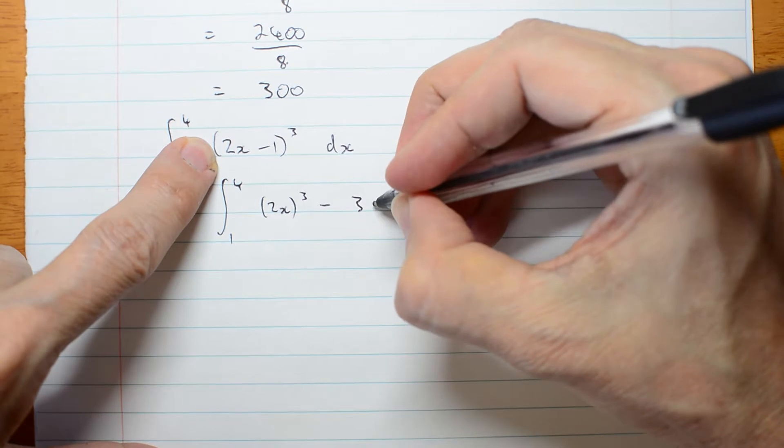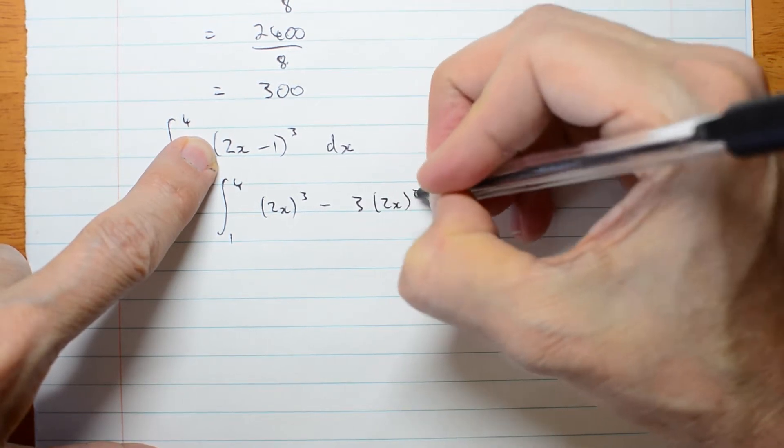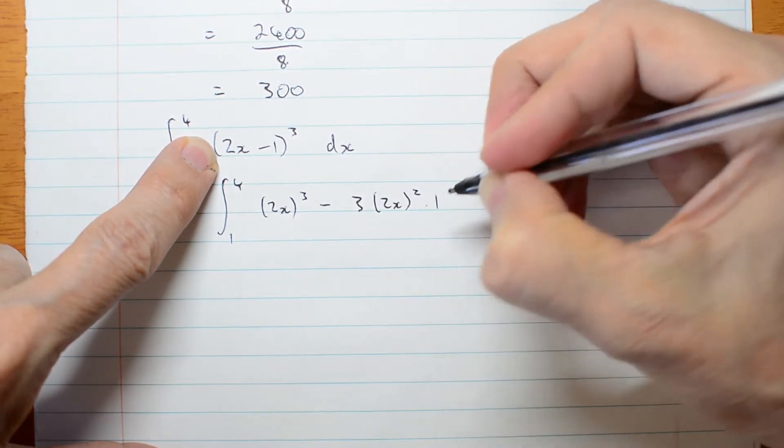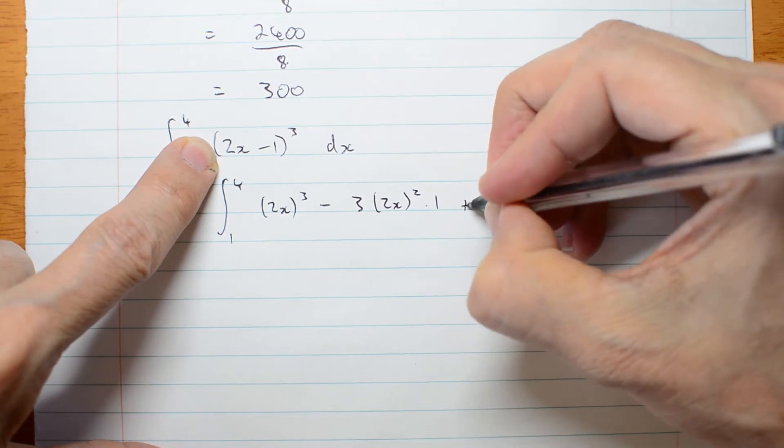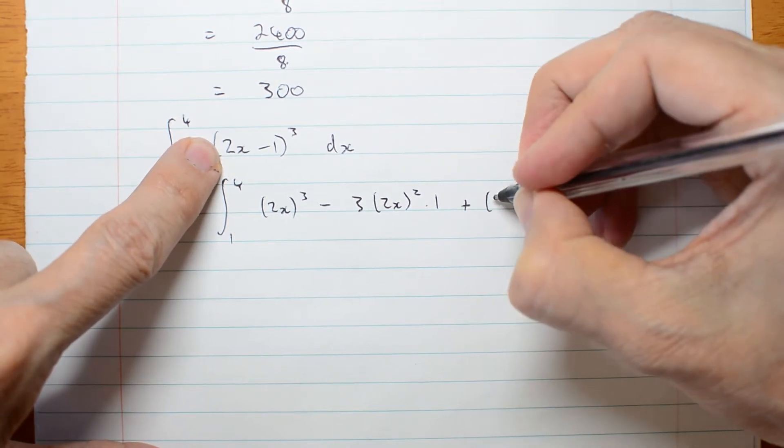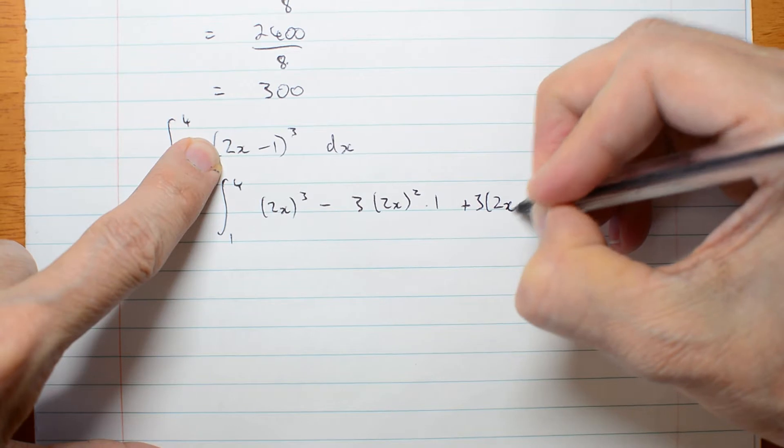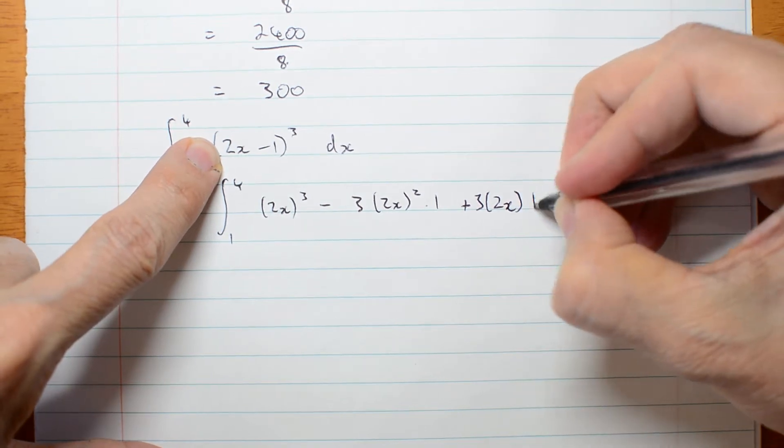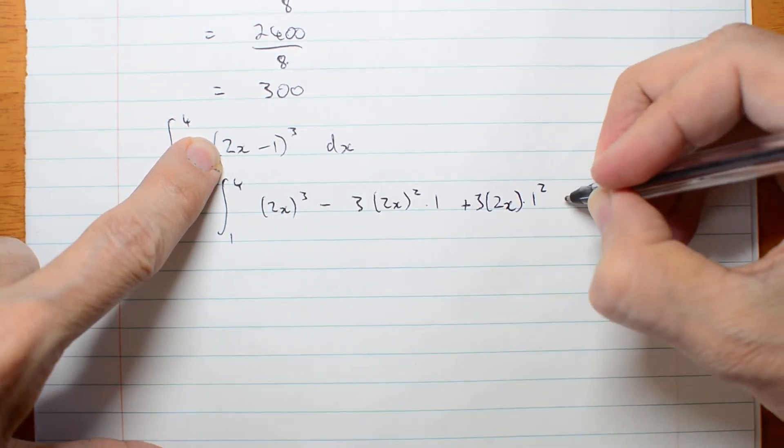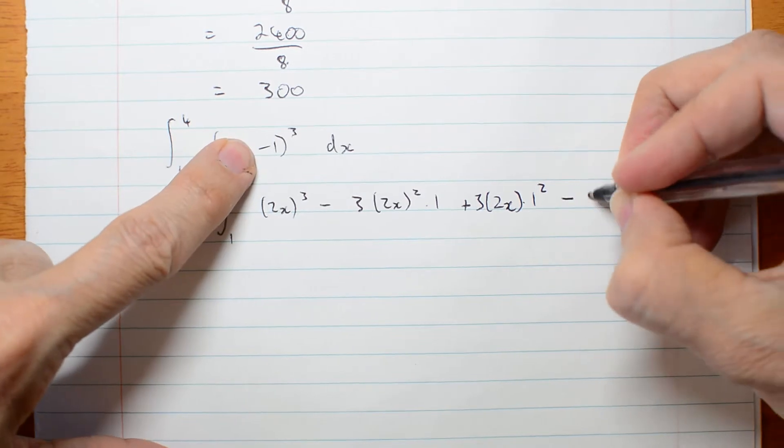3 times 2x squared times 1 plus 3 times 2x times 1 squared minus 1 cubed.